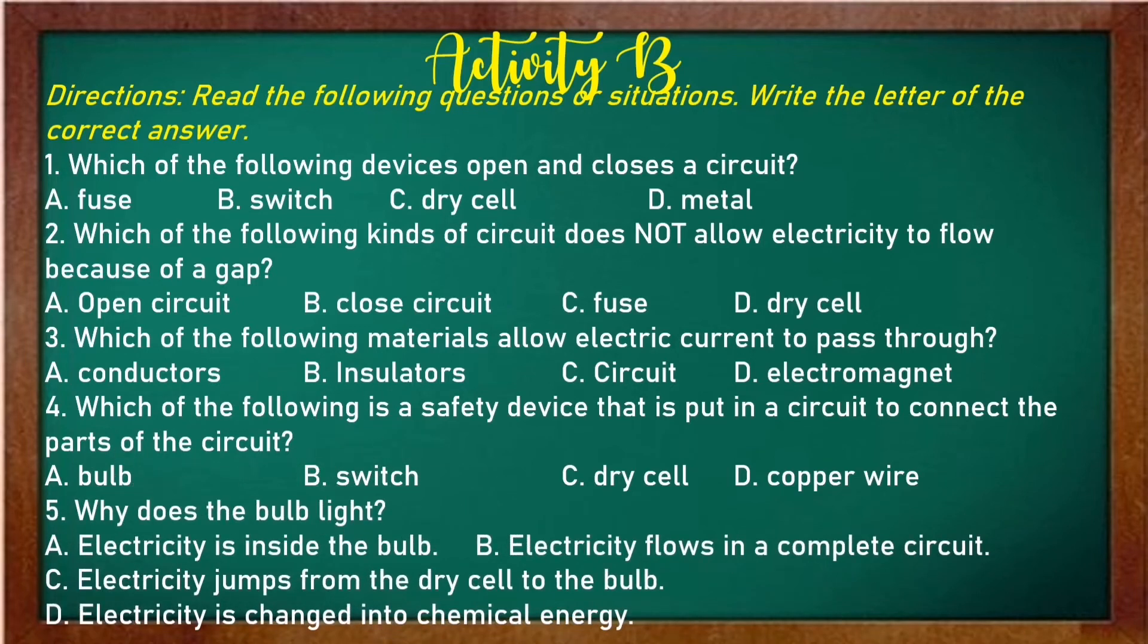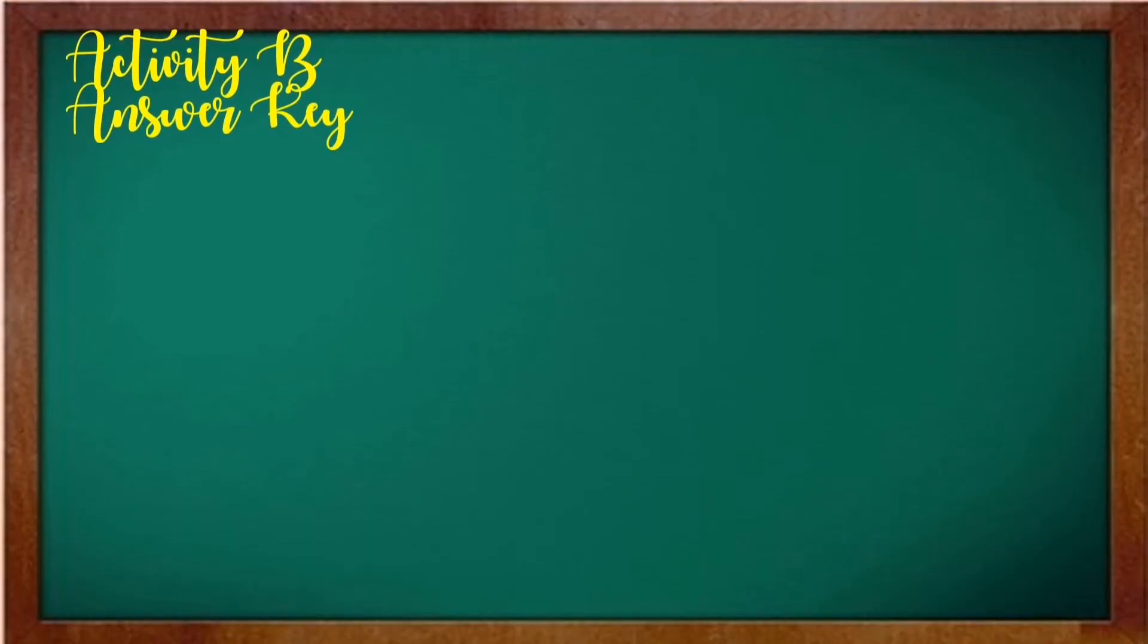And number five, why does the bulb light? Electricity is inside the bulb. B electricity flows in a complete circuit. C electricity jumps the dry cell to the bulb. Letter D electricity is changed into chemical energy. So, are you finished? Okay, we have here our answer. Number one is letter B. Number two is letter A. Number three is letter A. Number four is letter D. And number five is letter B. Good job!